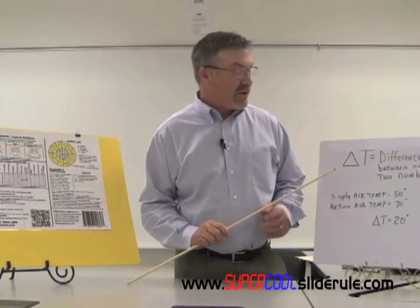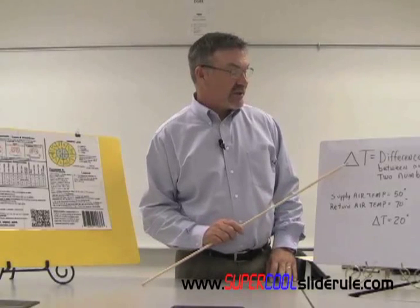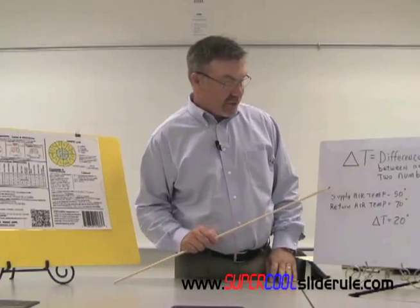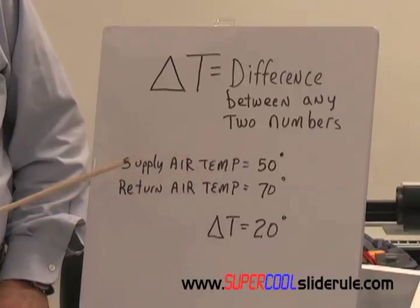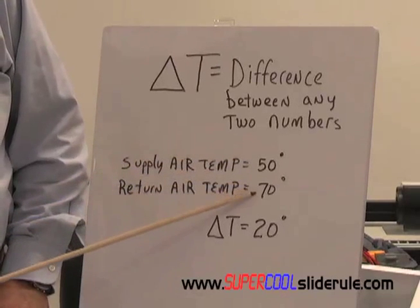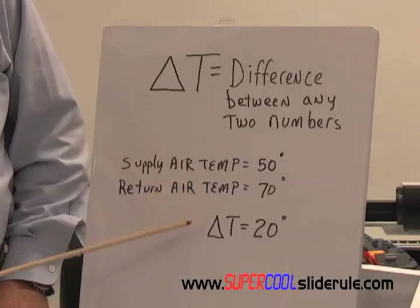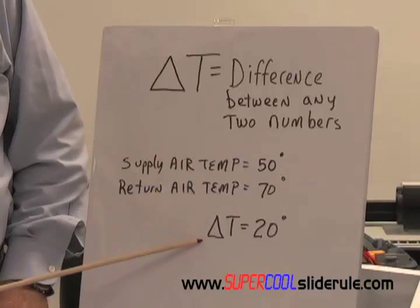So if we want to know what the Delta T is on an air conditioning system, on this one simply we take the supply air temp, which is 50 degrees, the return air temp, which is 70 degrees. The difference between these numbers is 20 degrees and that is your Delta T.